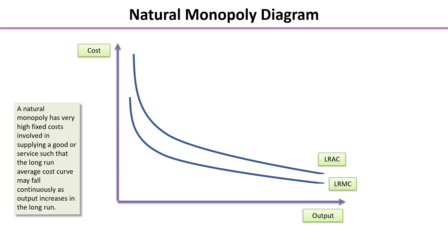Here is the natural monopoly diagram, with cost on the y-axis and output on the x-axis. A natural monopoly has very high fixed costs — putting together a network of electricity pylons and grids, or sewage pipes to each house, is very expensive. Supplying the good or service means that in the long run, average cost may fall continuously as output increases.